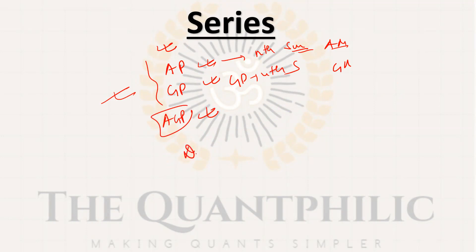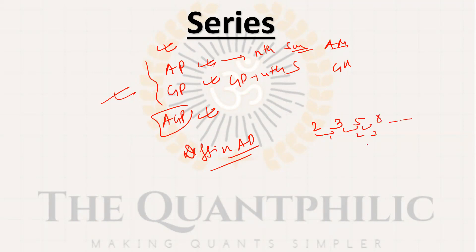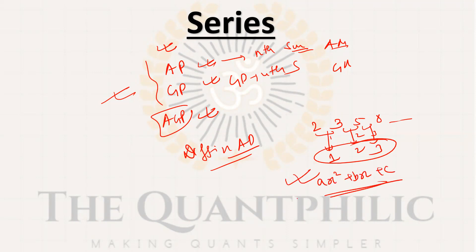Another series type is the difference-in-AP type. For example, a series like 2, 3, 5, 8 where the differences are 1, 2, 3 — an AP of differences. The question will ask for the nth term. In that case, the nth term will be of the form ax²+bx+c. Put different values to solve.